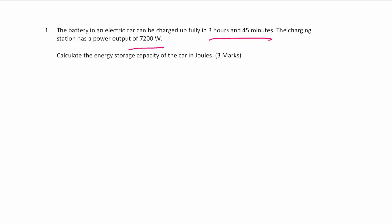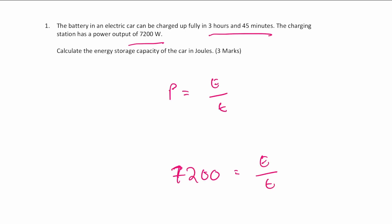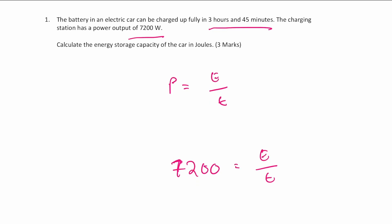The equation that we're interested in is: power is equal to the energy divided by the time, or the energy transfer divided by the time taken. We're told that the power output is 7200 watts, which is equal to the total energy transferred to the car divided by the time used to transfer that energy. So we can just rearrange this equation.